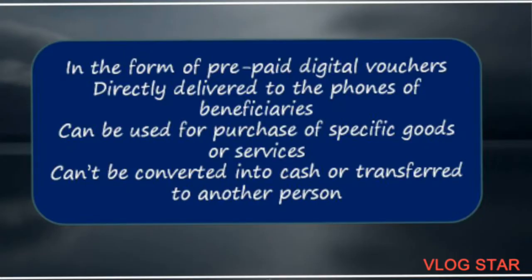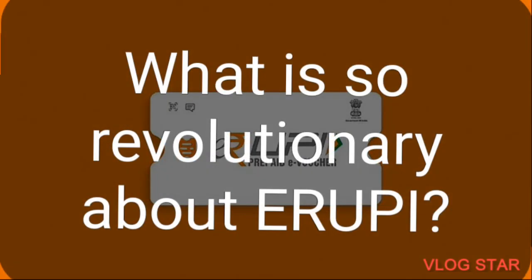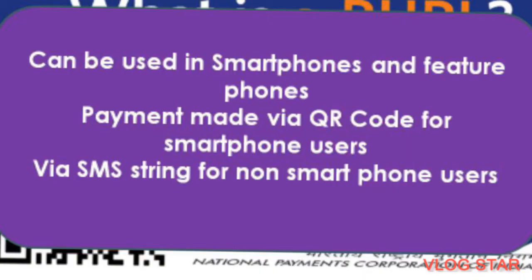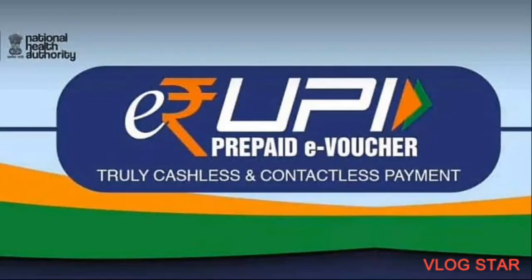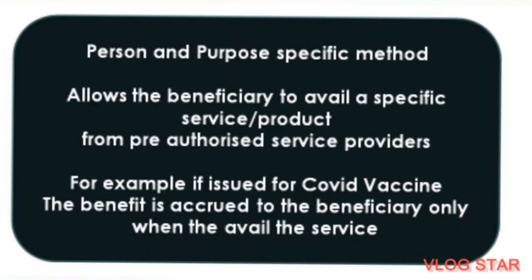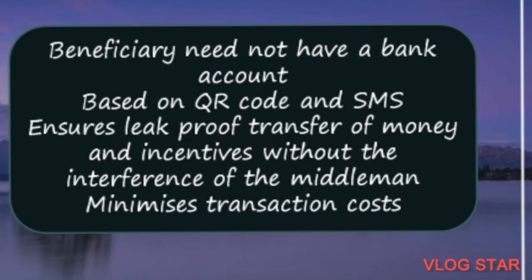What is so revolutionary about E-RUPI? Suppose the government wants to transfer some amount to a person. Instead of crediting the amount in their bank account, the government can authorize its bankers to issue E-RUPI to the beneficiary. The bank will then issue E-RUPI vouchers via QR code if the beneficiary has a smartphone, or via SMS string if they have a non-smartphone. Once the beneficiary receives the QR code or SMS, they can take it to the merchant or service provider for availing the service.